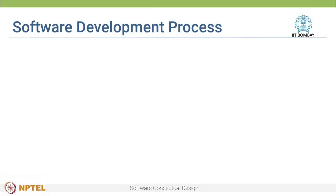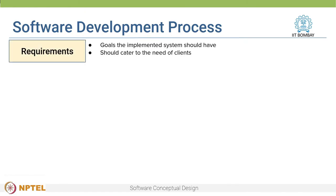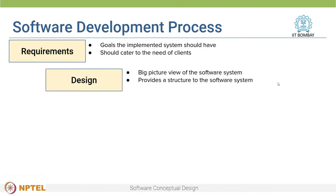In the previous video lectures, we spoke about the software development process and the various phases in this process. We looked at requirements, which are the goals which the implemented system should have, and these requirements should cater to the needs of the clients. Once we have gathered the requirements from the clients, we then come up with the design of the software system. The design is the big picture view of the software system and provides a structure to the entire software.